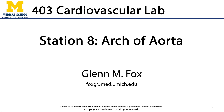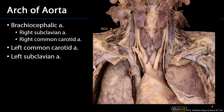Let's talk about the branches off of the arch of the aorta. The arch of the aorta is supplied by the ascending aorta. The ascending aorta moves into the arch of the aorta and then is continuous with the descending aorta. So let's focus on the branches from the arch.